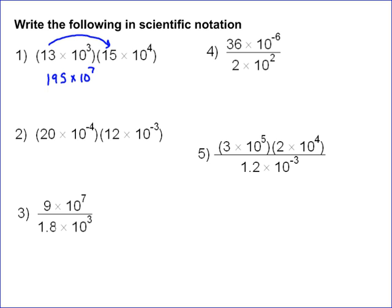Now we have to convert this to scientific notation, so we're going to move two places to the left. That gives us 1.95 times 10, and you add 2 to the exponent, so it becomes 10 to the 9th. That's your answer: 1.95 times 10 to the 9th.